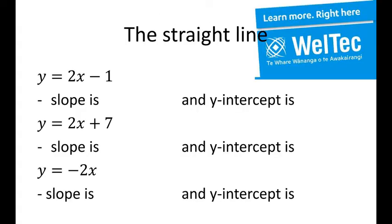Looking at these three functions: y equals 2x minus 1, the slope is 2 and the y-intercept is negative 1. y equals 2x plus 7, the slope is 2 and the y-intercept is 7. The last one, y equals negative 2x, the slope is negative 2 and the y-intercept is 0. That means it cuts through the origin.